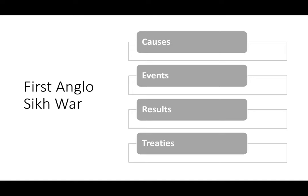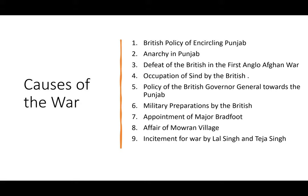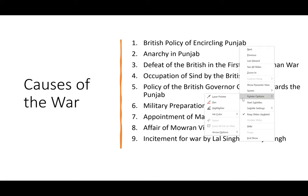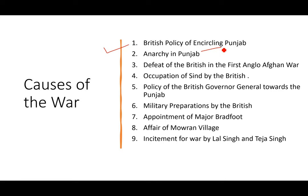Let's talk about the causes first. One is the British policy of encircling Punjab. Then there is the anarchy in Punjab, defeat of British in the first Anglo-Afghan war, occupation of Sindh by British, policy of the governor general towards Punjab, military preparation by British, British appointment of Major Broadfoot — some books write it as Broadfoot, others as Bradfoot. Then the affair of Mohra village, and incitement of war by Lal Singh and Tej Singh.